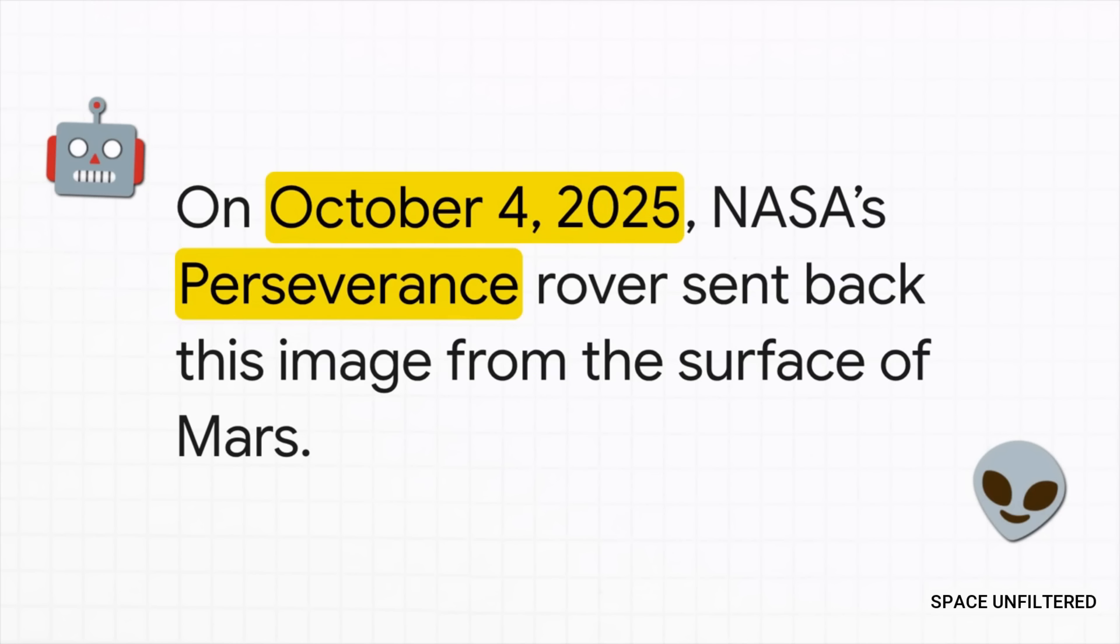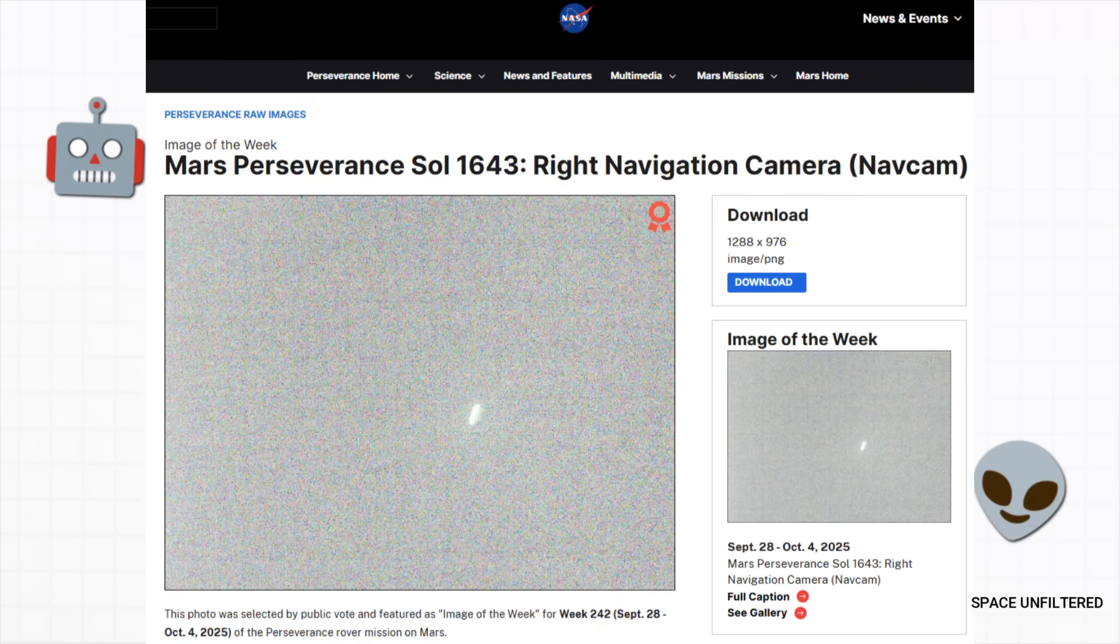Okay, here it is. This came to us on October 4th, 2025, straight from the Perseverance rover. You see the typical Martian landscape, right? But then there's that, a bright, perfectly straight line of light just hanging there in the sky. It's so clean, so defined, it immediately made everyone ask, what is that?